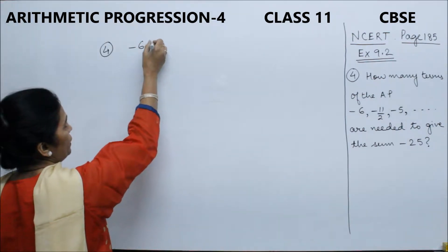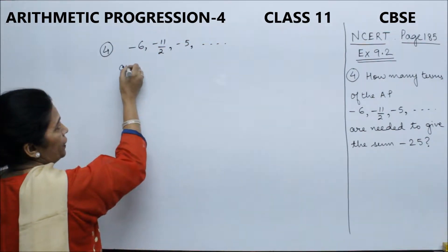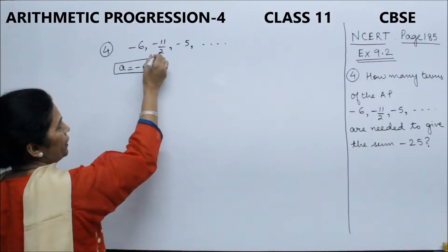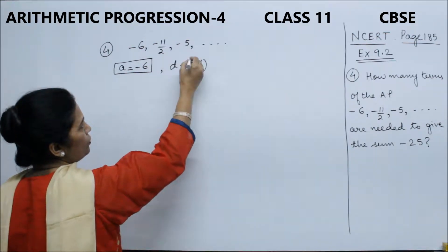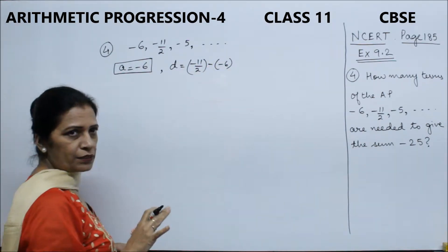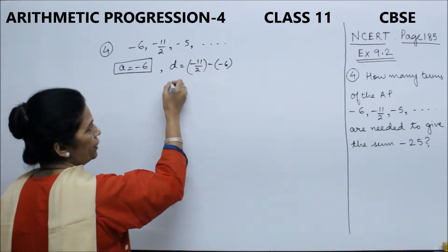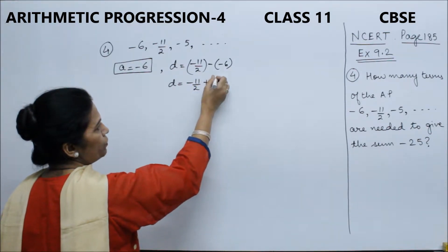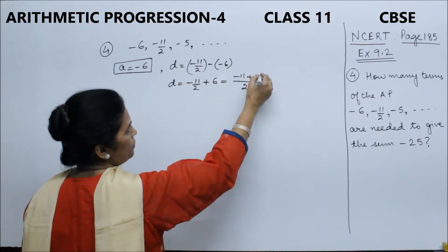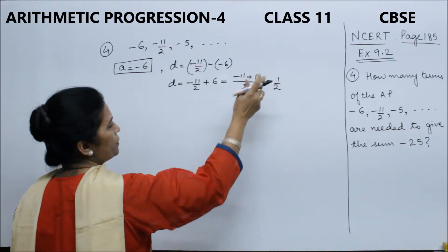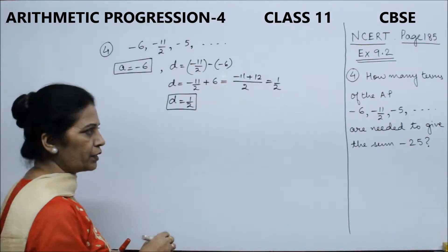The arithmetic progression has first term a = -6. To calculate d, we use second term minus first term: d = -11/2 - (-6). When we have negative values, we add brackets to avoid calculation mistakes. So d = -11/2 + 6 = (-11 + 12)/2 = 1/2. The common difference d value is half.